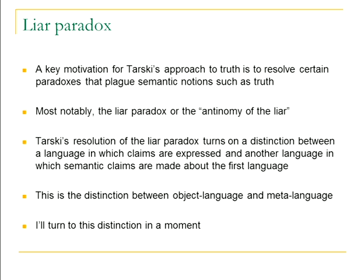There had been a time early in the 20th century where philosophers were not comfortable talking about truth — partly because it seemed to be a metaphysical notion, and partly because there seemed to be paradoxical aspects of thinking about truth. One of Tarski's motivations in developing his theory is to try to resolve the liar paradox — he calls it the antinomy of the liar.